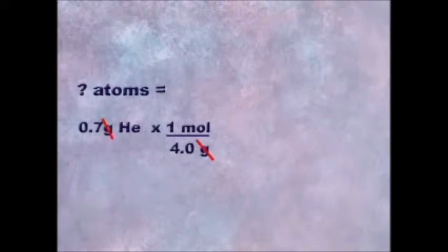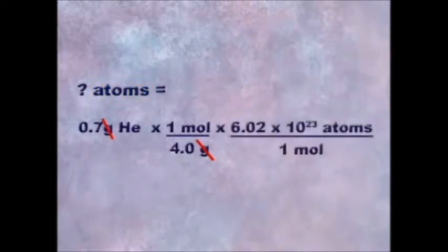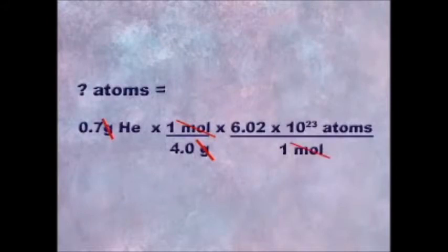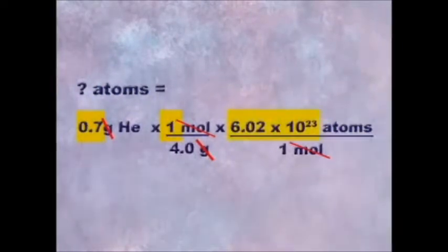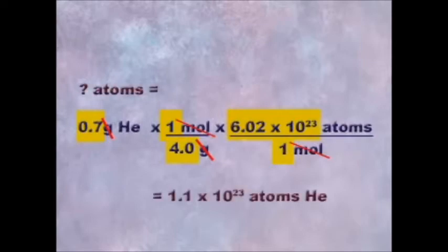We can't stop yet because we're looking for atoms. The conversion factor we know between moles and atoms is that there are 6.02 times 10 to the 23rd atoms in 1 mole. Again, the units tell us what goes on bottom and what goes on top. The moles cancel, leaving us with atoms. Since that is what we're looking for, we multiply 0.7 times 1 times 6.02 times 10 to the 23rd, then divide by 4.0 to get 1.1 times 10 to the 23rd atoms.